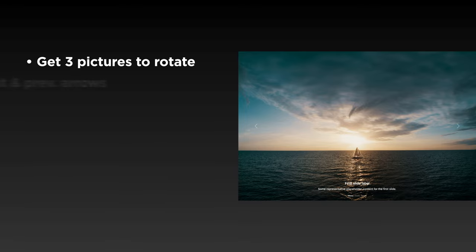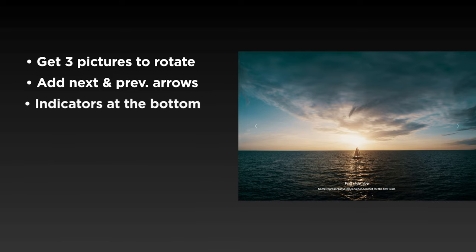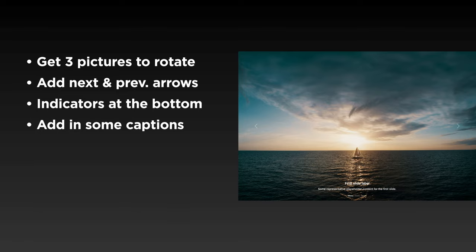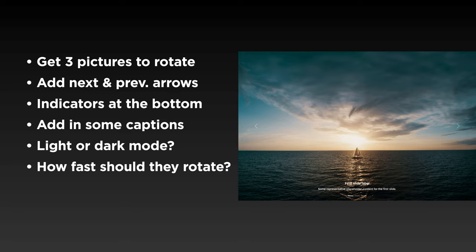We'll start by getting three pictures to rotate on the screen. After that we'll add the next and previous arrows, then indicators at the bottom to show how many slides are in the slideshow, then captions. For the fun stuff we'll add options like light or dark mode, change how fast or slow the pictures rotate, and choose between a slide and a fade effect.